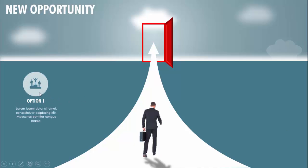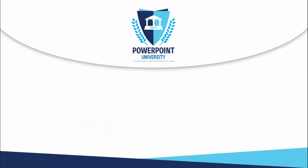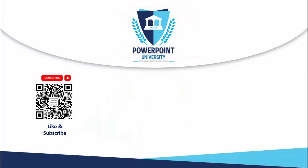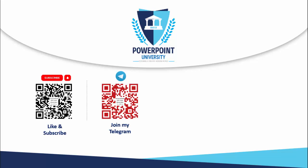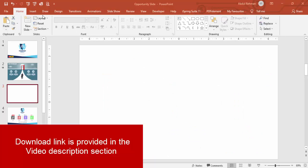When I click it will show me a different option — option one with the icon, and you can add the detailed text. Then comes the second option, third option, and fourth option. If you have not subscribed to my channel PowerPoint University, please subscribe, enable the bell notification icon. You can join my Telegram group via the QR code and support my channel through Patreon or PayPal. Let's start the tutorial.